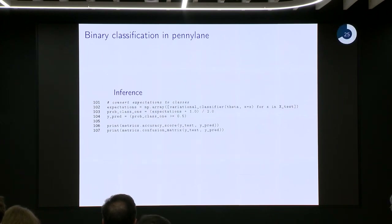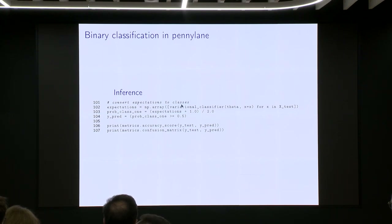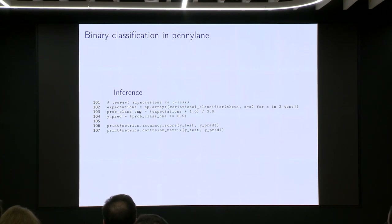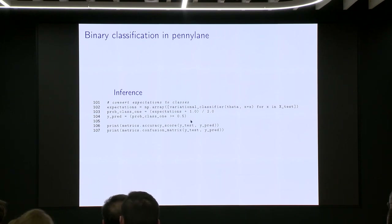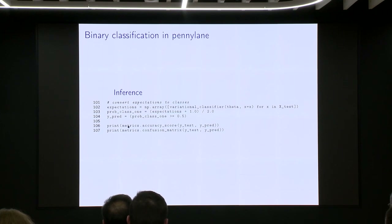We create a lambda function that depends only on theta — with the batch data x and labels y passed to the cost function — and pass this lambda to the optimizer. With initial theta, the optimizer returns theta at t+1. To evaluate the classifier, we apply it over the test set to get an array of labels, transform expectation values to probabilities by shifting up by one and dividing by two, then calculate accuracy score or confusion matrix using sklearn.metrics.